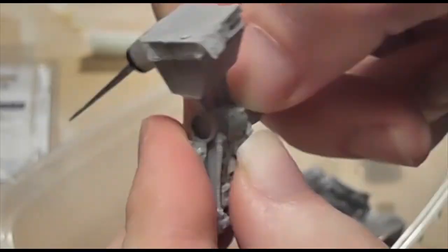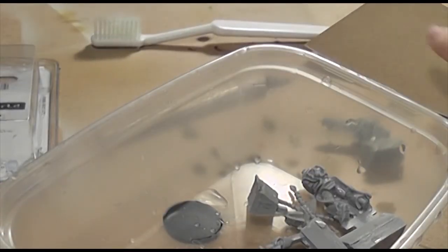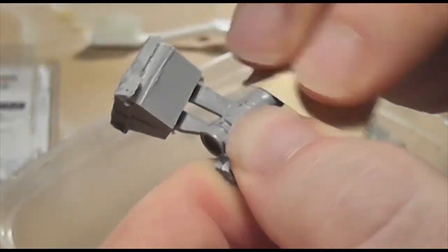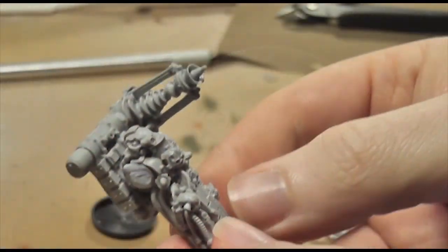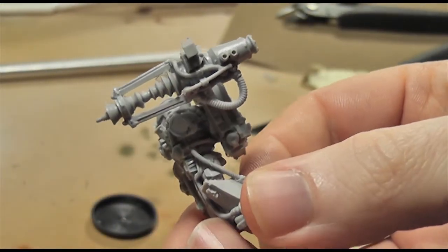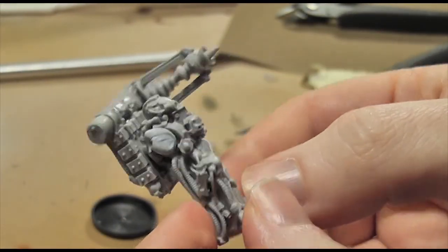The mold lines aren't that bad, just scraping away with a blade and some really fine sandpaper to get rid of the worst of it. Not that it was actually that bad, I've had a lot worse from Forge World.